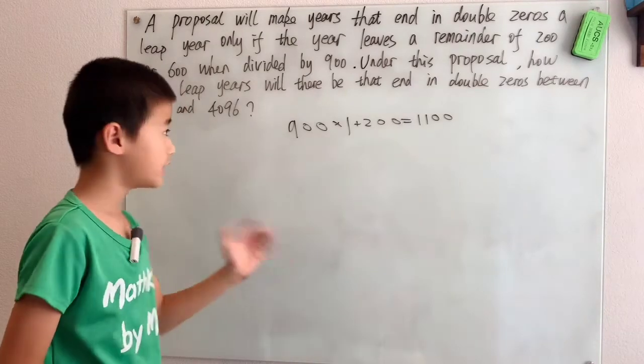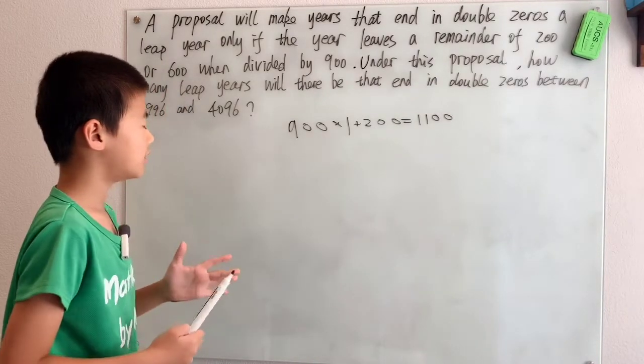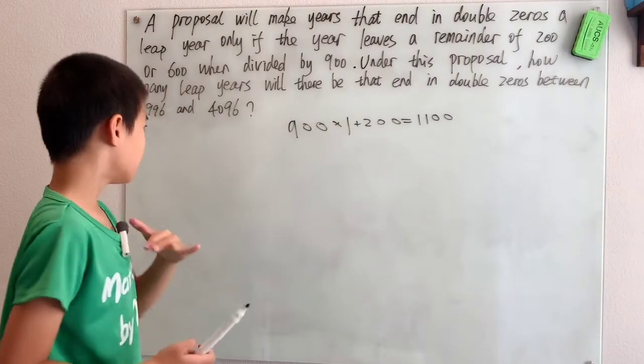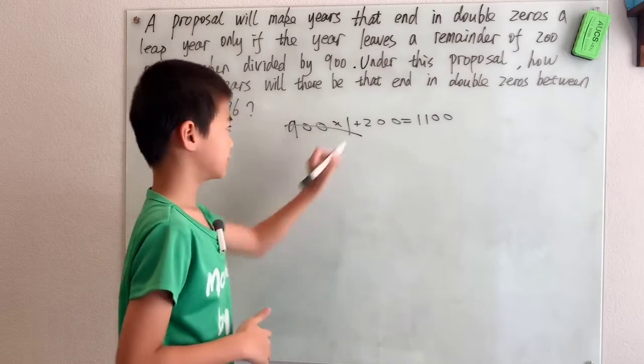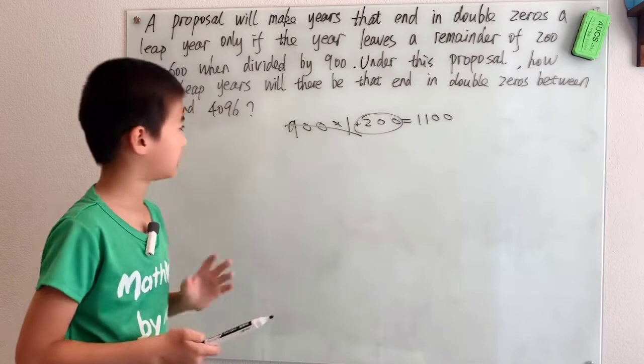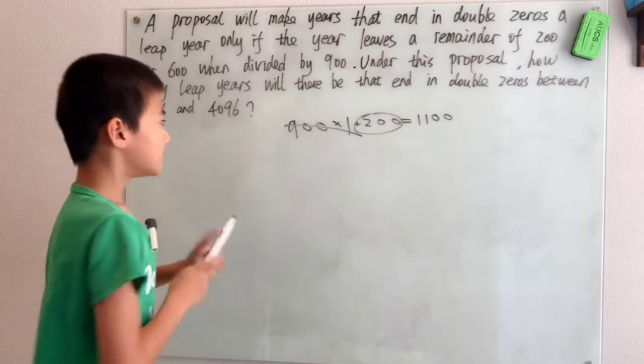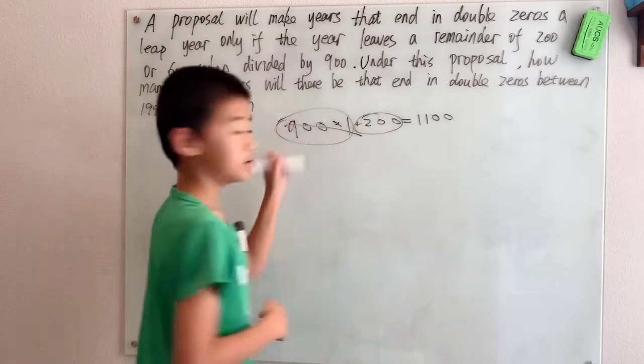When divided by 900, the 900 just cancels and you have 200 as the remainder. So we can just go through all the multiples of 900.